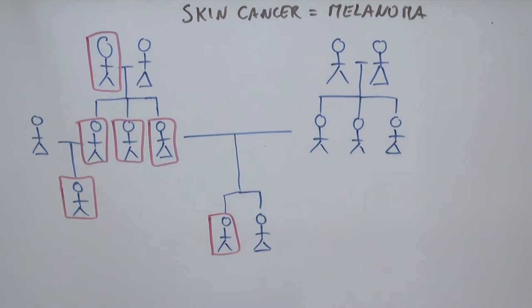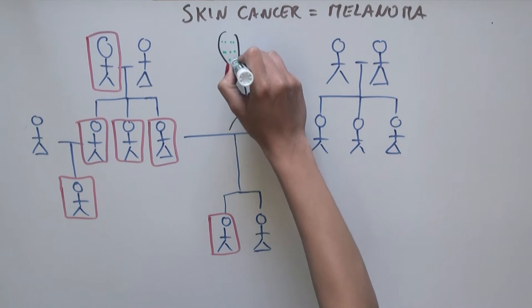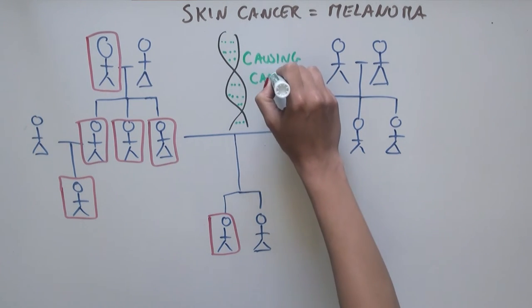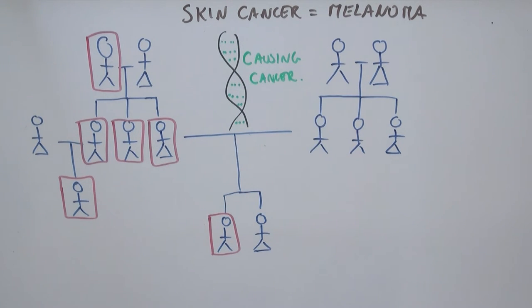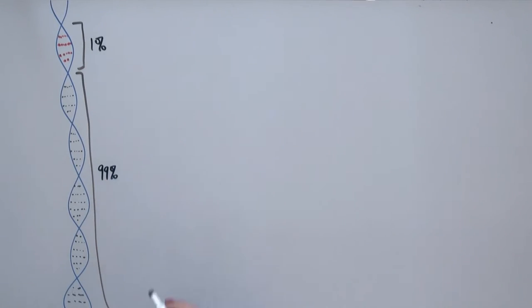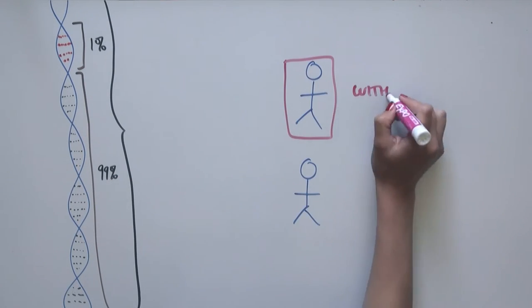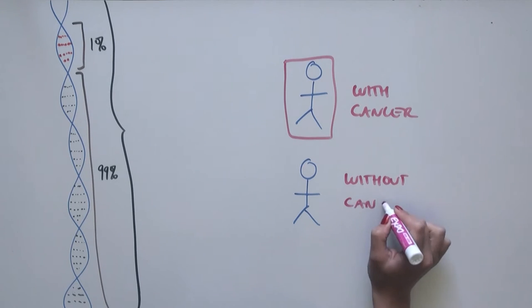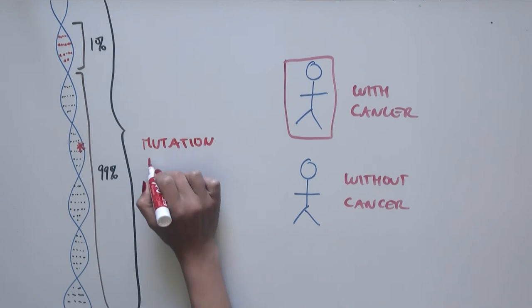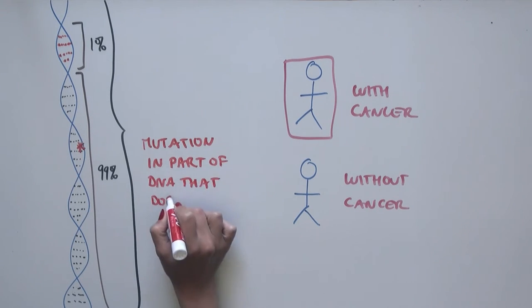Because cancer ran in the family, this suggested that something in the DNA sequence was causing these individuals to develop cancer. So the scientists looked at the entire DNA sequence of individuals in the family with and without cancer. And what they found was a mutation, or a change in the DNA sequence, in a part of the DNA that doesn't make proteins.